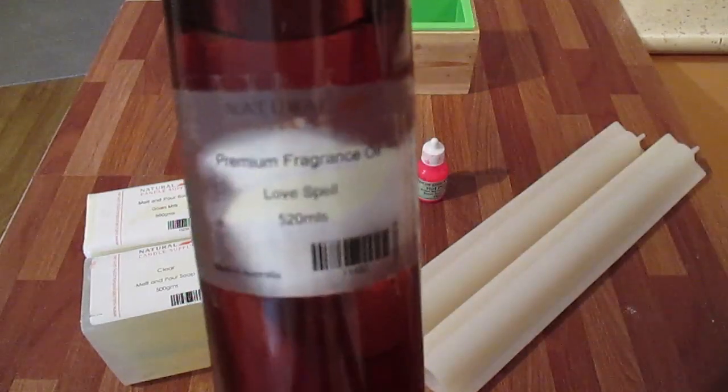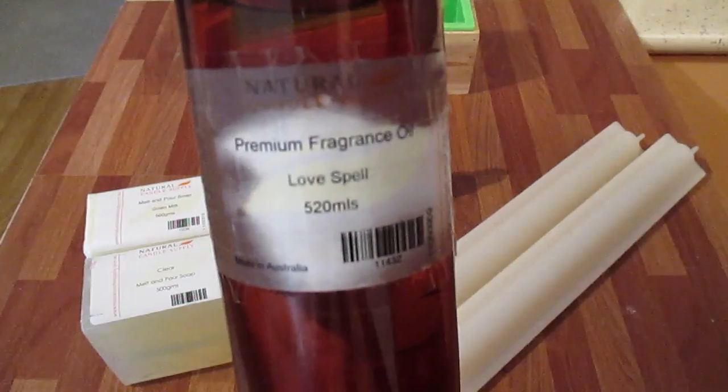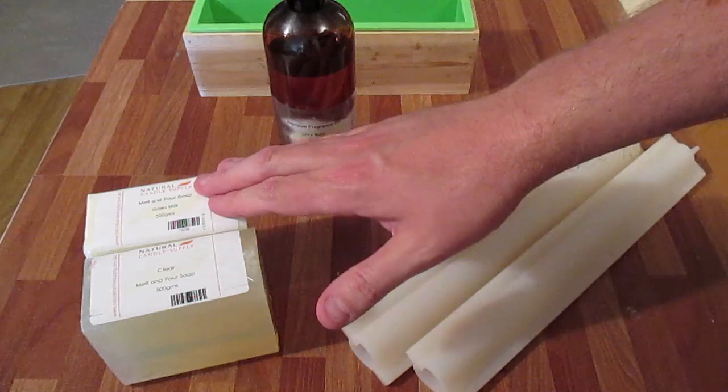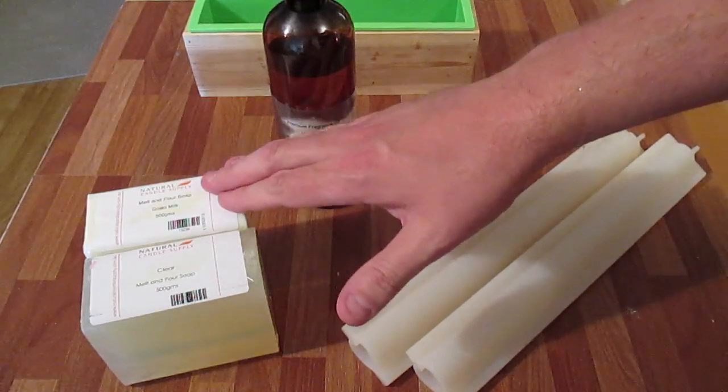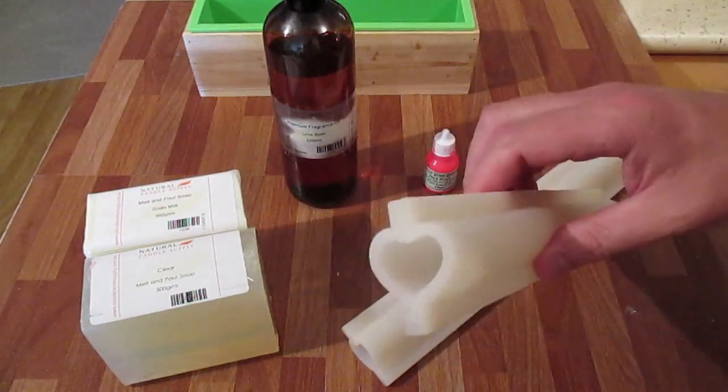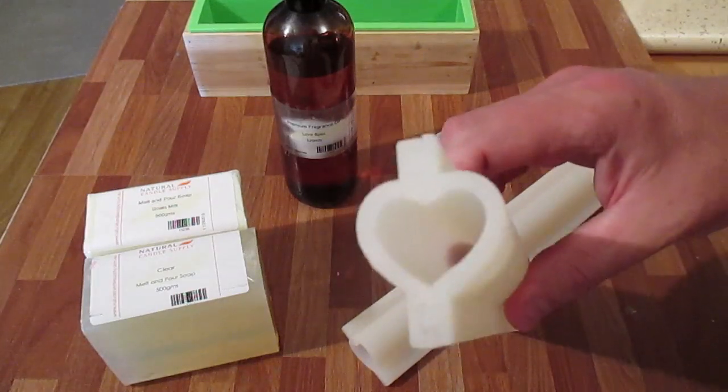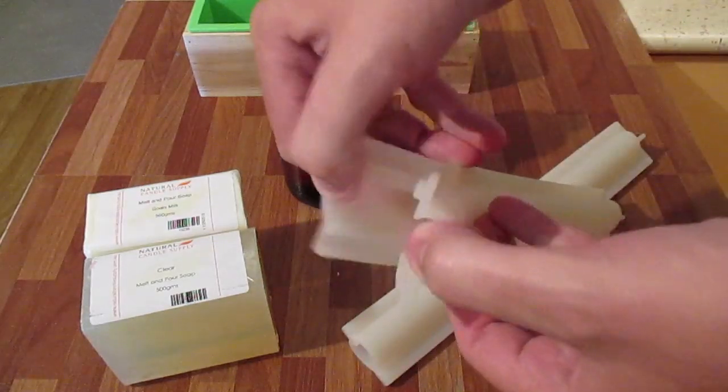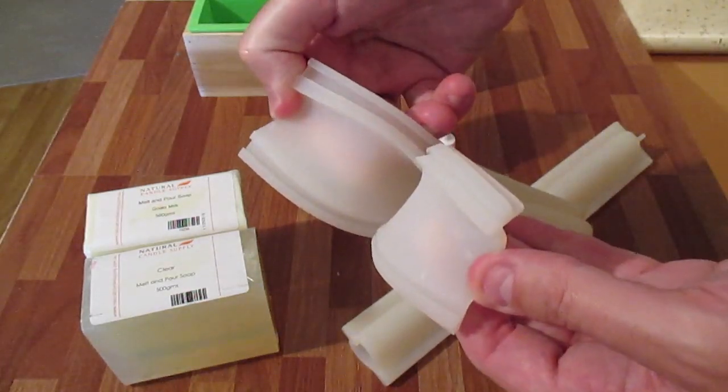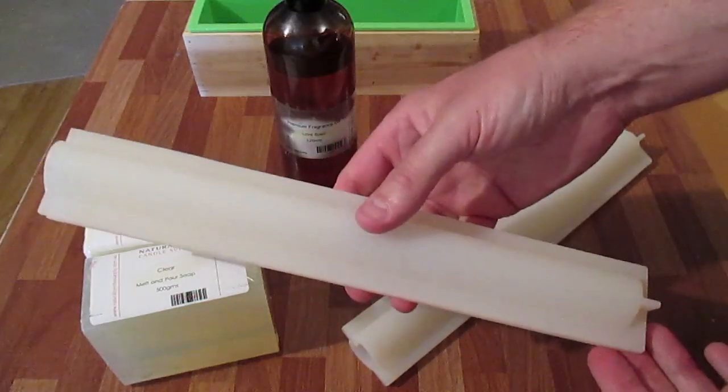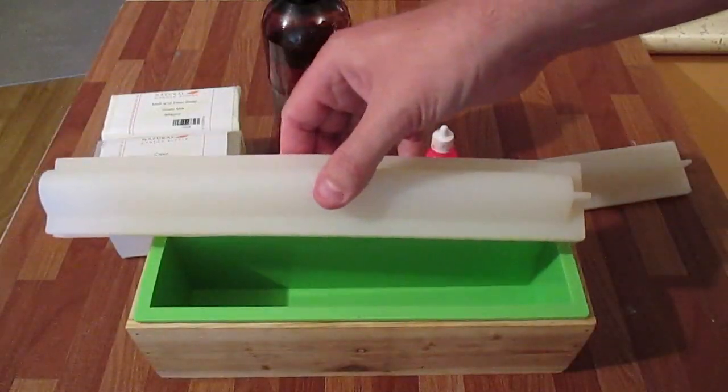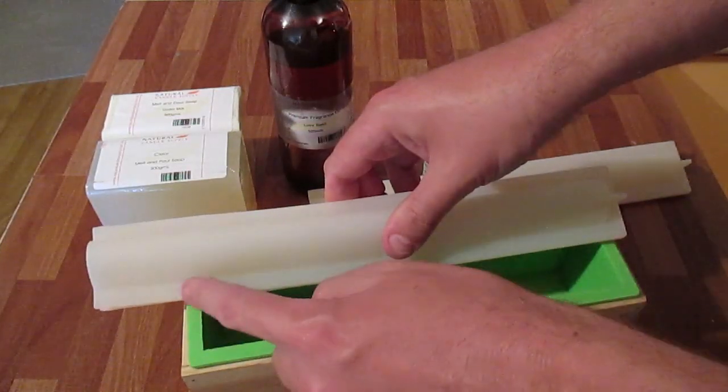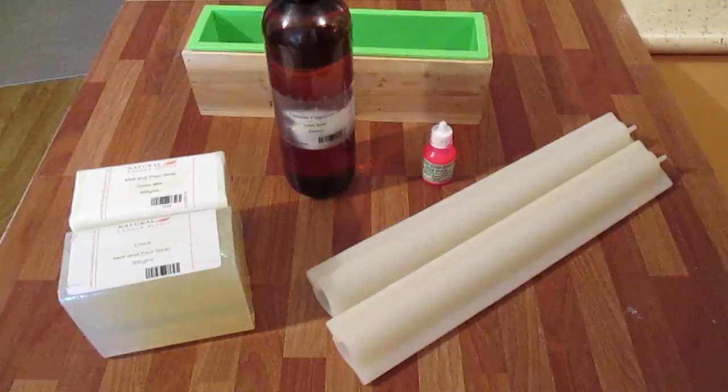In front of me I've got my fragrance which is Love Spell from Natural Candle Supply. I have my Hot Pink Liquid Dye from Aussie Soap Supplies. I'm going to be using Goat's Milk Soap for the white, clear for the pink. Down here I have two heart molds. These will be created first and once they set then I'll make the second parts. These molds come apart, they're very flexible and easy to use. Each one is about 30 centimeters long but because the loaf is actually less than that we chop a little bit off. So let's get started.